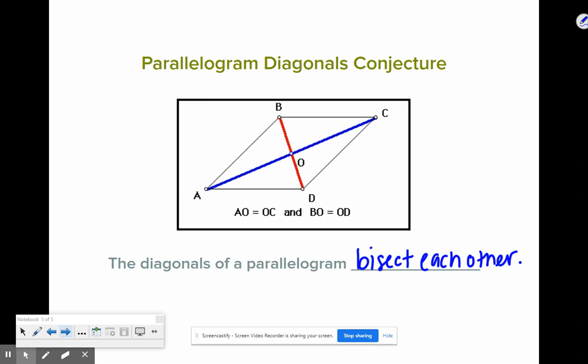So that means AO over here is congruent to CO, right? Because O is that bisector point, that midpoint. BO and DO would also be congruent to one another.